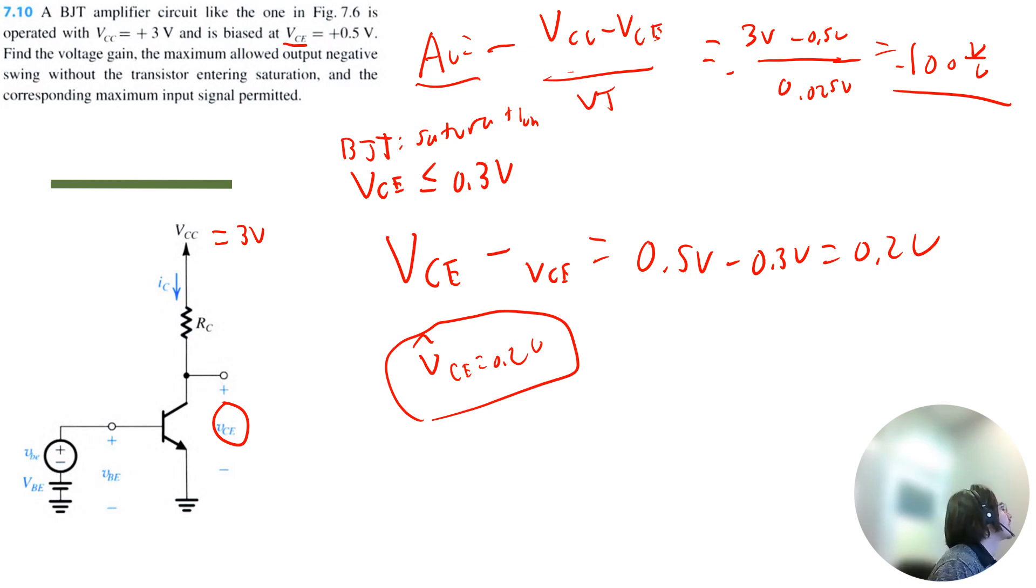Next step, find the corresponding maximum input signal permitted. So basically, if we have an input signal, which is going to be VBE, we have our swing at VBE. And if we multiply that by the absolute value of our gain, that's going to get us the output swing, which is 0.2.